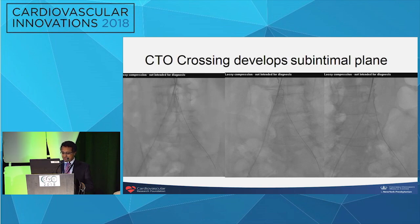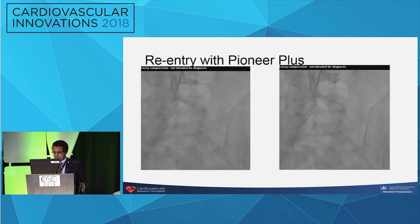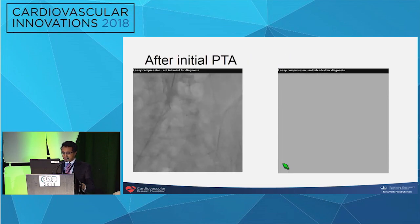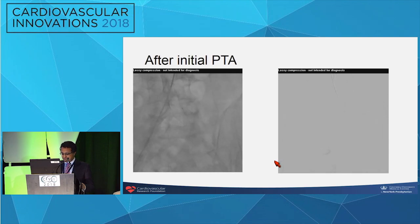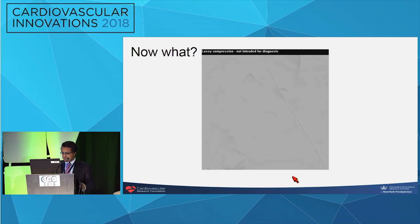We went with a retrograde approach and were subintimal in multiple projections. Perhaps we should have gone from the arm, but we went retrograde. We used the Pioneer Plus device and were able to reenter, then did a soft balloon dilatation. Given the title of my talk, you can anticipate what happens next. At first it looks like we're okay, but then we try to go in with a right-sized balloon and establish a channel — and we have a perforation.